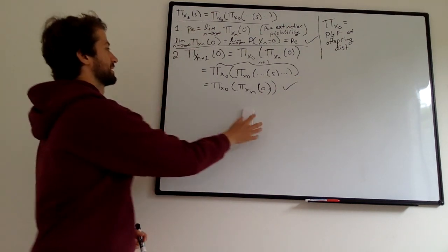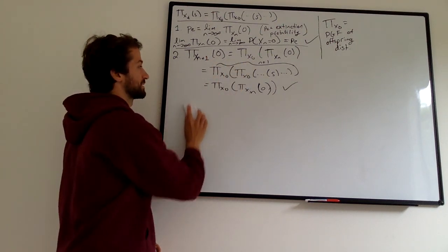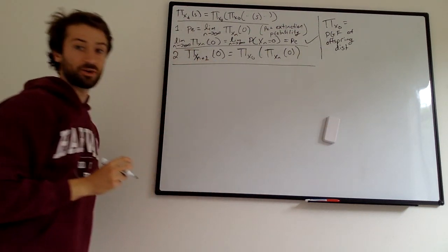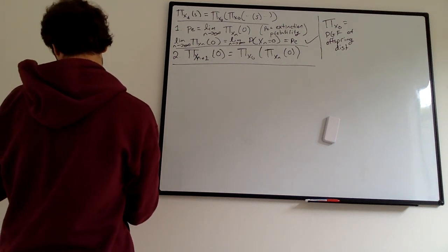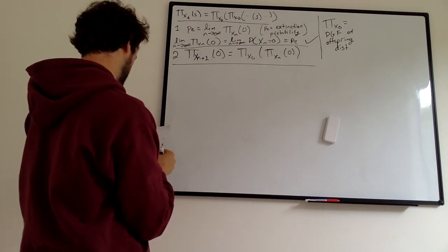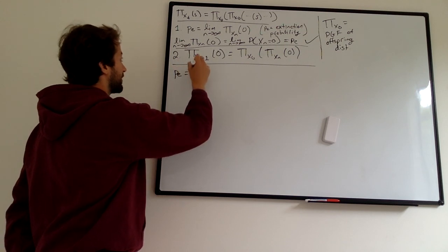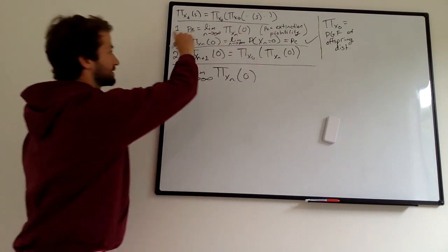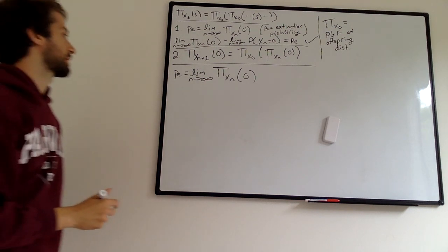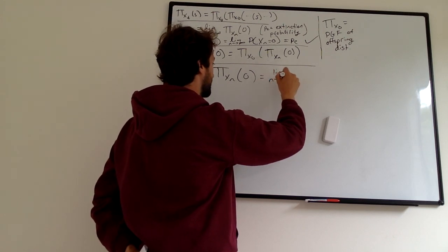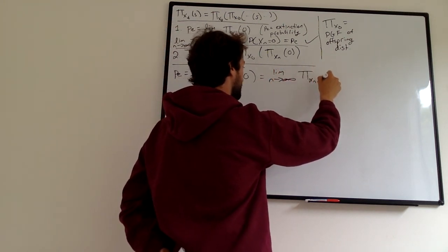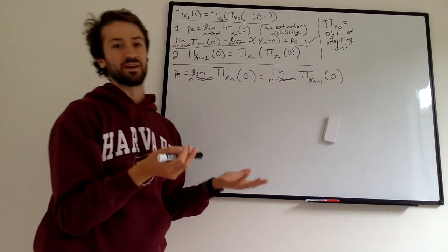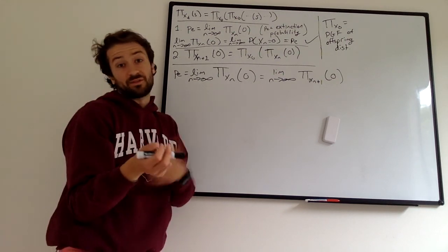We're going to use those two facts — I'll erase the working above to have space — and kick off our proof to find the extinction probability P sub E. We start with Fact 1: P sub E equals the limit as N goes to infinity of the PGF of X sub N evaluated at zero. For our first step, we replace N with N plus one, giving the limit as N goes to infinity of the PGF of X sub N plus one evaluated at zero. Those are equal because N is going to infinity, so N and N plus one both go to infinity.